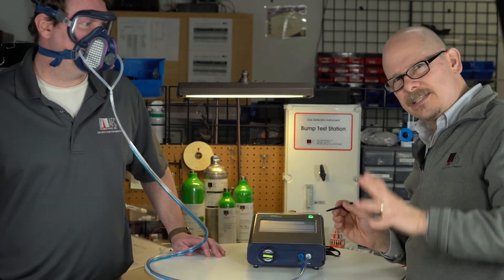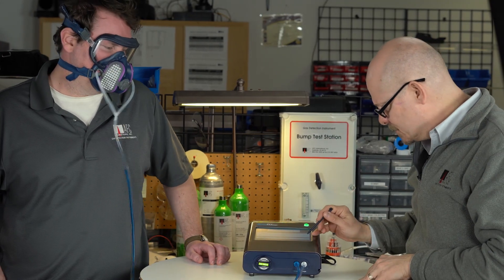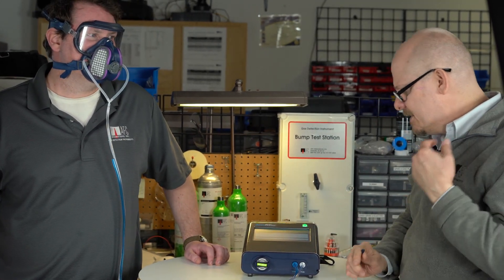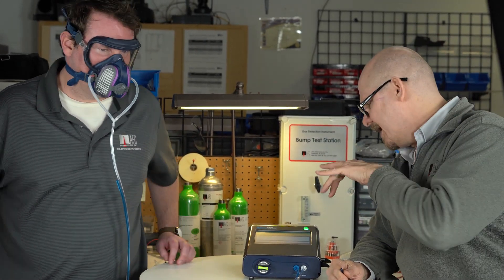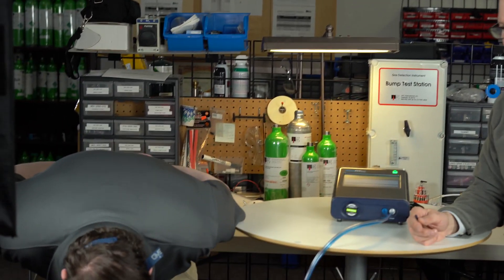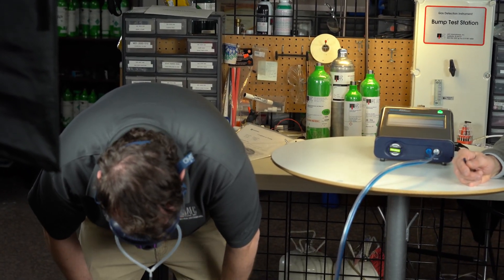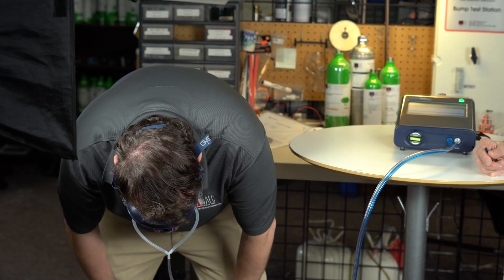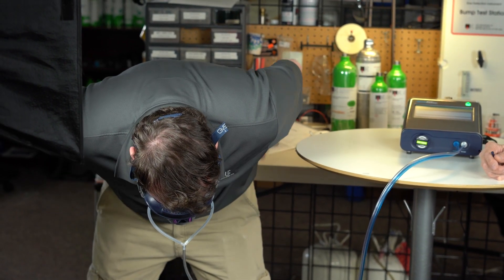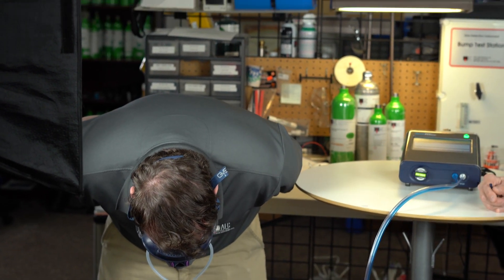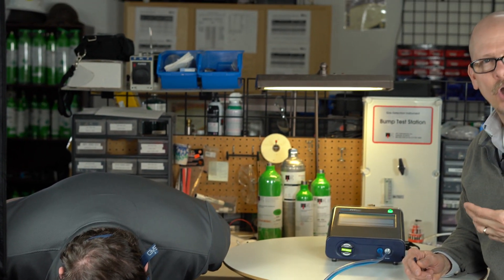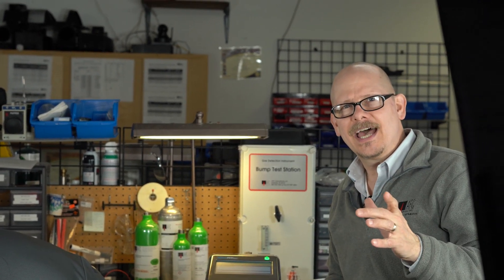I'm just going to hit the start button. There's four exercises. I'm going to have George bend over a little bit and breathe. The cool thing about using the AccuFit 9000 is that it's an active type fit test. You can breathe, talk, do all the things that you're normally working. How cool is that?